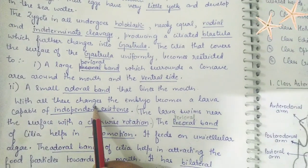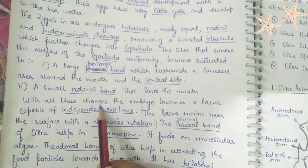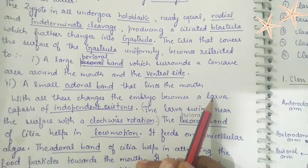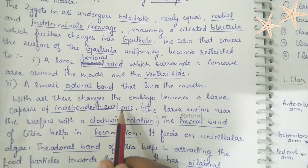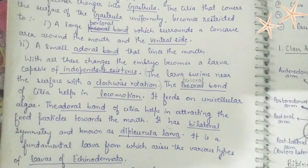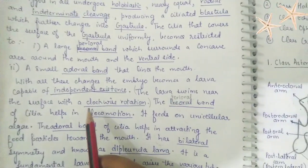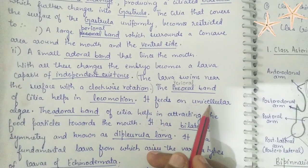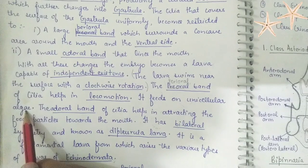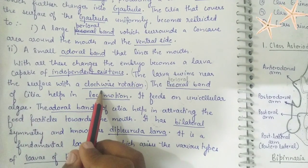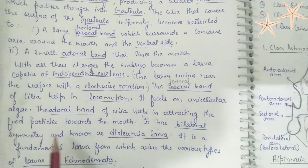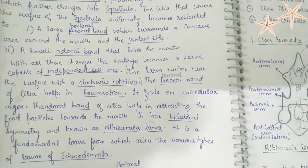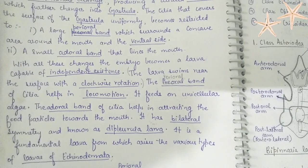With all these changes, the embryo becomes the larva, because it is capable of independent existence. The perioral band of cilia helps in locomotion — it shows clockwise rotation on the surface of the water — and it feeds on unicellular algae. The adoral band helps in attracting food particles towards the mouth. So the perioral band helps in locomotion while the adoral band helps in attracting food particles towards the mouth.